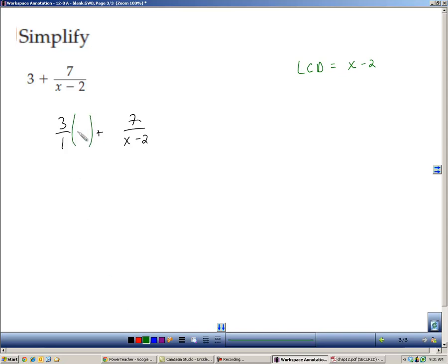Now I'm going to multiply this by x minus 2 to create the denominator that I want. And this is very similar to the last one, 3x minus 6. Then we add the 7, and we put that all over the common denominator of x minus 2. So 3x plus 1 over x minus 2.